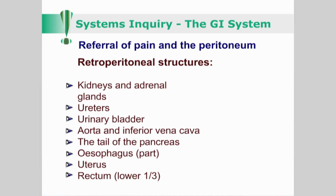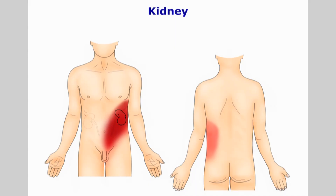Another anatomical arrangement that affects the referral of visceral pain to the abdominal walls is the anterior or posterior location of an organ in relation to the peritoneum. Important retroperitoneal structures include the kidneys, ureters, bladder, duodenum and most of the pancreas. These will refer pain to the posterior abdominal wall by virtue of their proximity. Retroperitoneal structures can often lead to muscular symptoms, for example spasms of the psoas muscle from kidney or ureter pain.